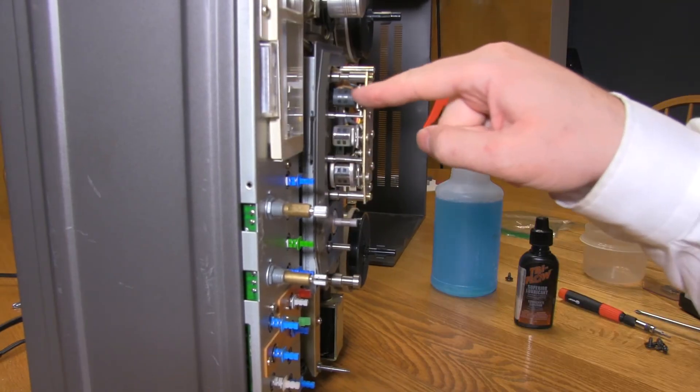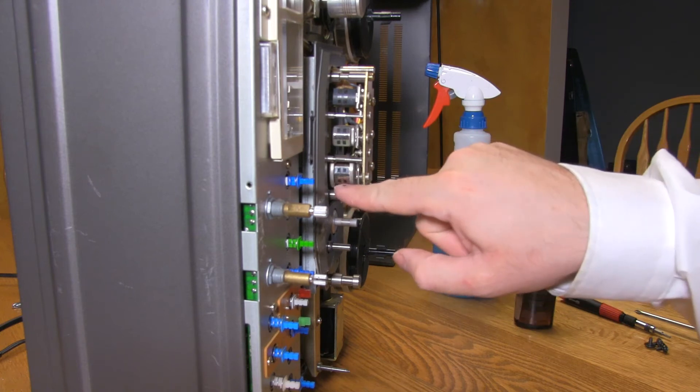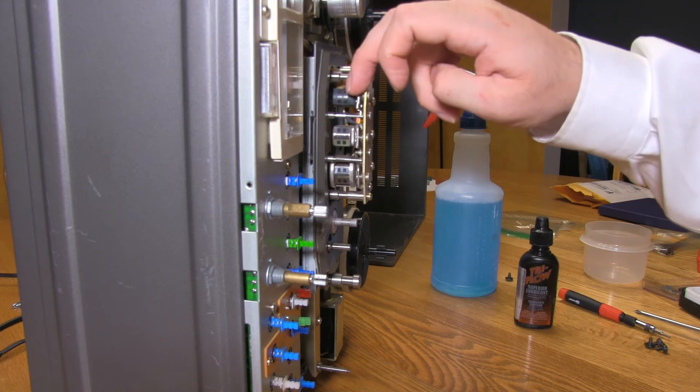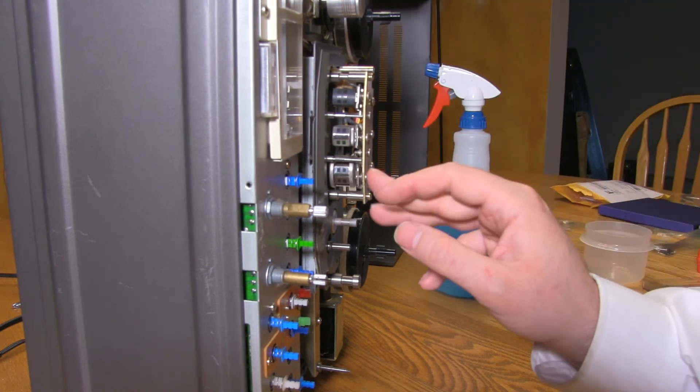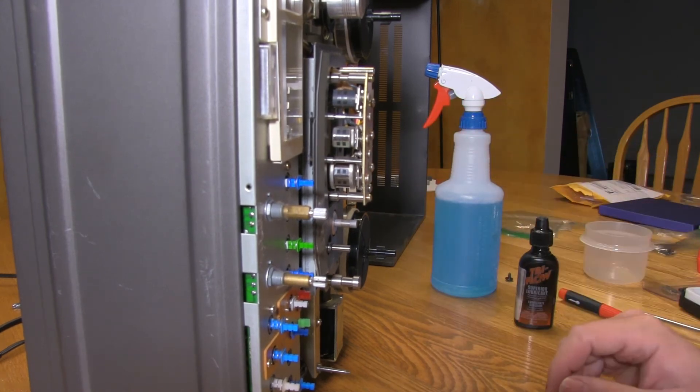It uses a three-head design: erase, record, playback. It is half-track, so each track takes up half the tape basically. Plus it lets you monitor off of the tape while you're recording so you know you have a good signal. It runs at 15 inches per second.